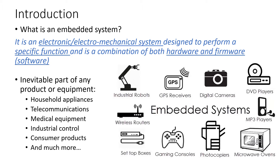Firmware is software that doesn't change quite often. For example, if we take a lift, it has an embedded system. The purpose of the lift is not about computation — it's to take users from one floor to the other. The hardware includes mechanical parts and electronic components. The firmware in a lift is embedded in a ROM — we rarely see ROMs being replaced or reflashed, which is why it's called firmware.